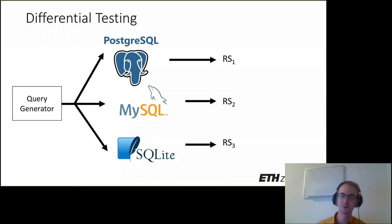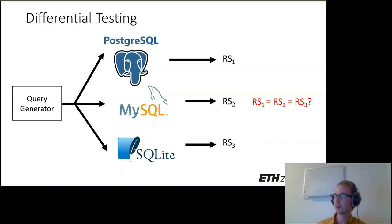While SQLSmith and other random query generators have been very effective in finding crash bugs, unfortunately we cannot use them to detect logic bugs because they simply cannot detect these cases. One approach that works at first sight is differential testing, where a query generator generates a SQL query that is sent to multiple database management systems — for example, Postgres, MySQL, and SQLite — and we compare the three result sets. If they're the same, no bug detected; if they differ, at least one system is affected by a bug.